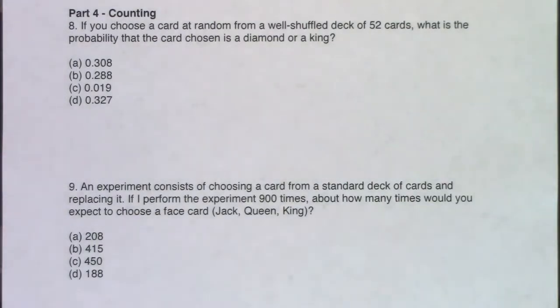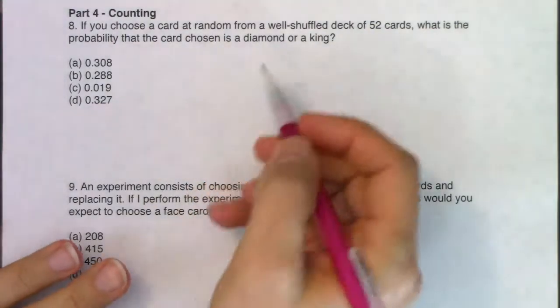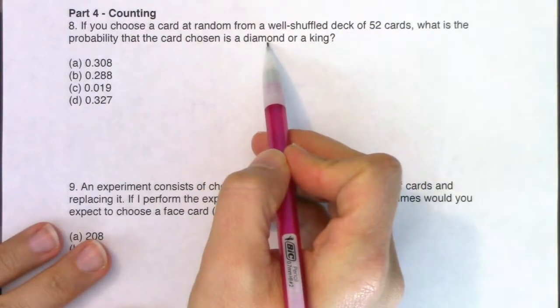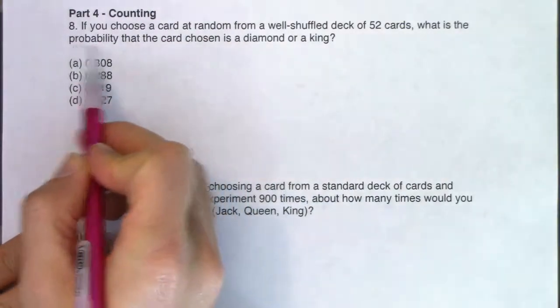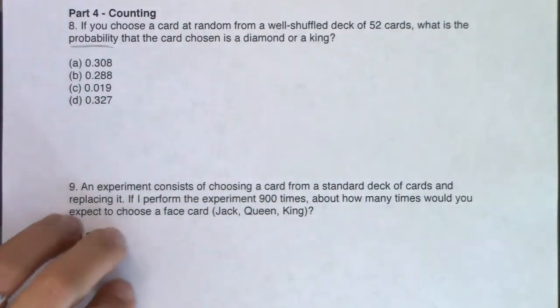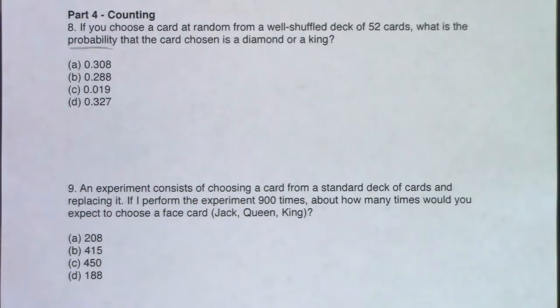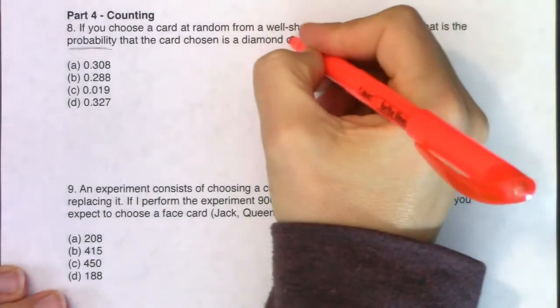If you choose a card at random from a well-shuffled deck of cards, what is the probability that the card chosen is a diamond or a king? I see my buzzword of probability. All of my answers are between zero and one, as it should be, but I also see the word or.